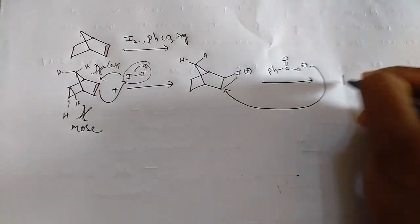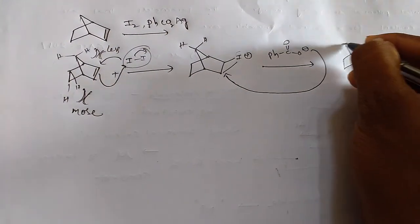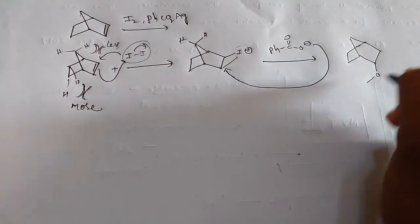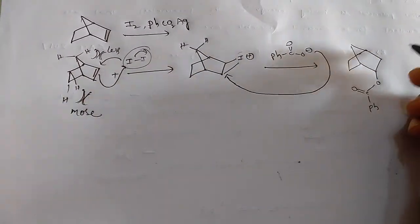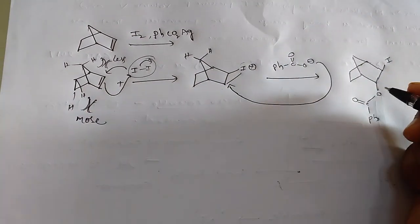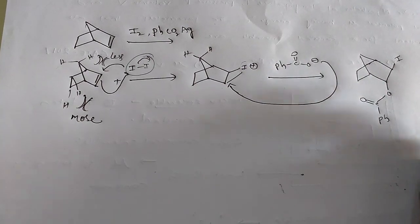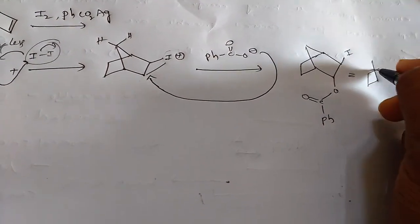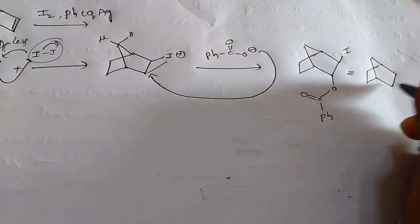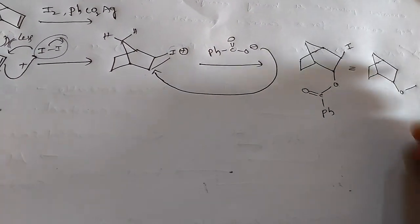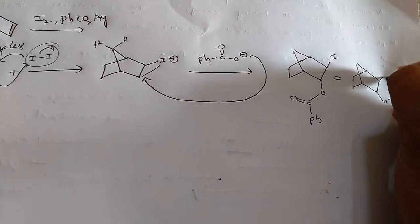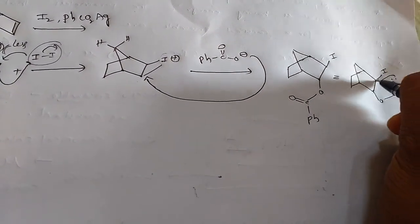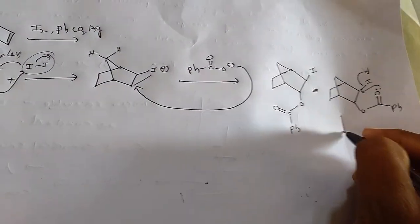Secondly, carbonyl oxygen attacks from below of this iodine because already it is in bulk here. Next, so here iodine, then we can write it as like this.